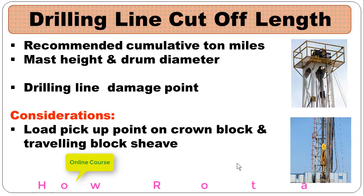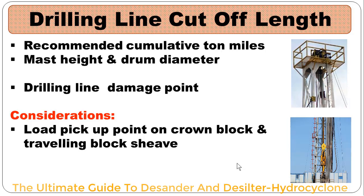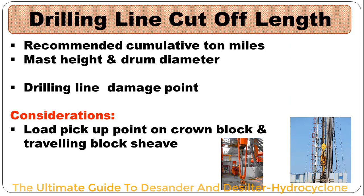We need to avoid the shuffling of these stress points between the traveling block and crown block. To prevent this, we should not cut a drilling line length that is a multiple of the distance between the crown block and traveling block sheave when the traveling block is at the lower position, such as when the elevator is picking up the string from the rotary table.